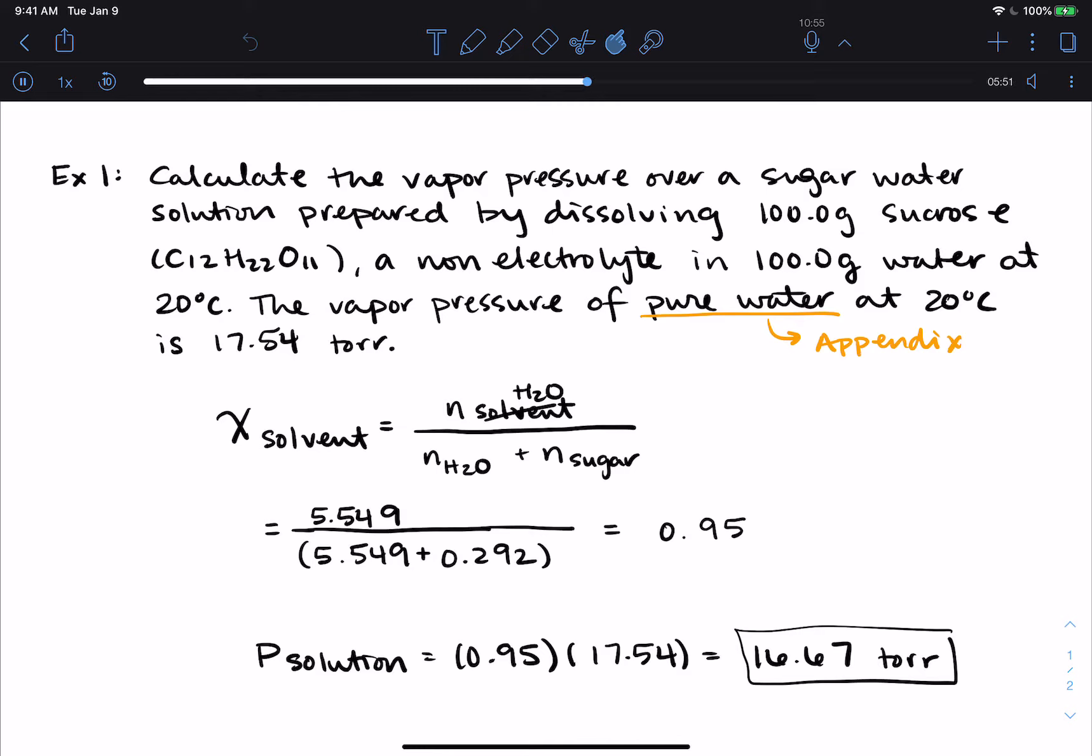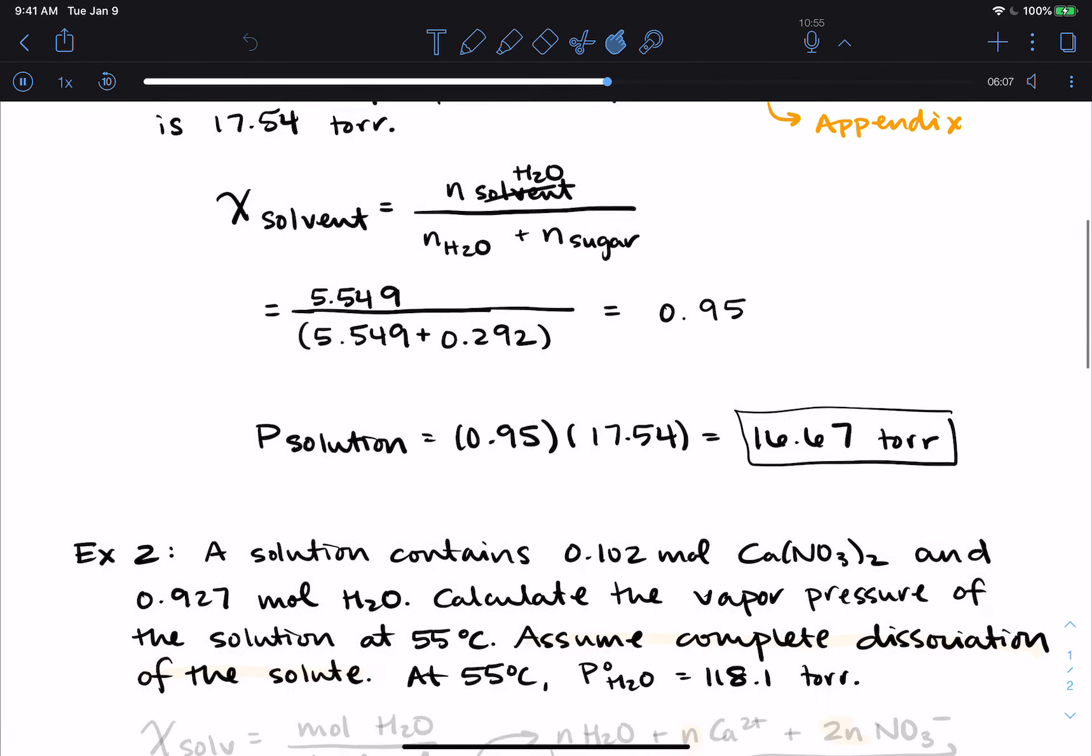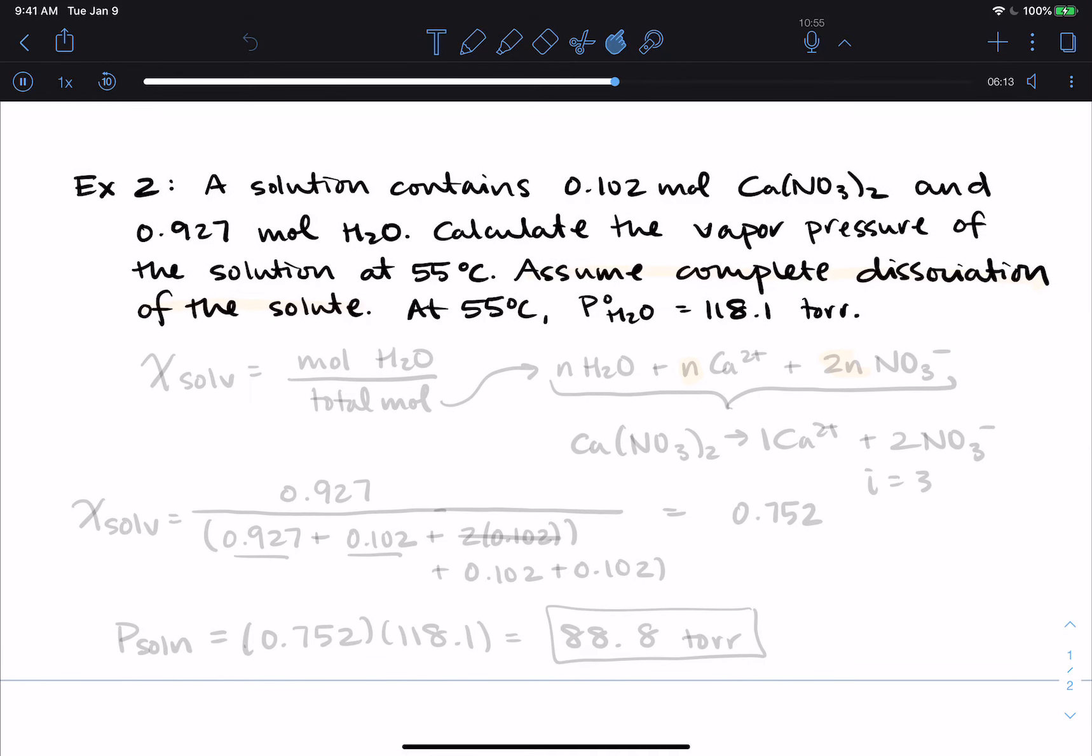Okay. So that was the first example. Our second example will be an ionic compound. So we're going to have to worry about the i-factor. Again, I'm going to pause, take a minute to write this problem out, and then we'll come back and work on it. So the second example says a solution contains 0.102 moles of calcium nitrate and 0.927 moles of water. Calculate the vapor pressure of the solution at 55 degrees Celsius. Assume complete dissociation of the solute.